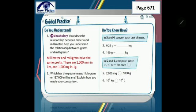Number 2: Which has the greater mass — 1 kilogram or 137,000 milligrams? Our conversion factor: 1 kilogram equals 1,000,000 milligrams. Comparing: 1,000,000 milligrams is greater than 137,000 milligrams. So 1 kilogram is greater than 137,000 milligrams.